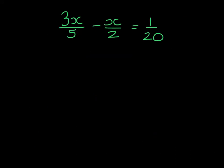In this example, we have 3 different denominators: 5, 2, and 20. We need to multiply by a number that will get rid of all of these denominators, and in this case that number is 20. So we need to multiply the left-hand side by 20, and the right-hand side by 20 — all the terms, all the ingredients.